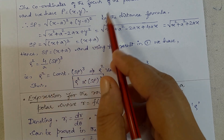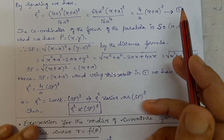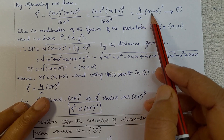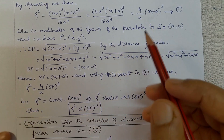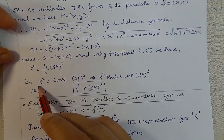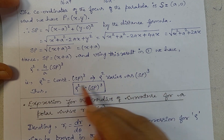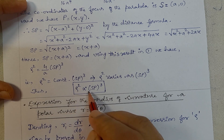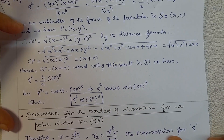Using SP = x + a in equation 1: ρ² = (4/a) · SP³. Since 4/a is a constant, ρ² is directly proportional to SP³. Therefore ρ² varies as SP³. Thus proved.